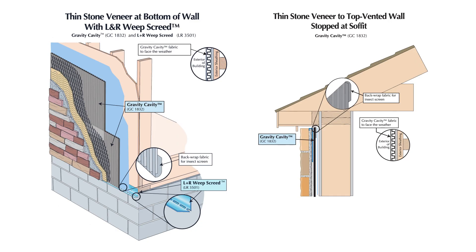This video will show a typical installation of the Gravity Cavity rain screen drainage plane with a thin stone veneer. The Gravity Cavity creates a continuous rain screen drainage plane behind the thin veneer and is vented to the top and bottom of the wall system.